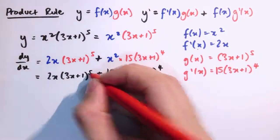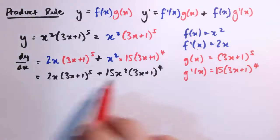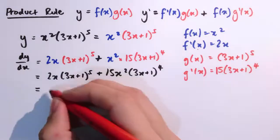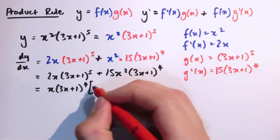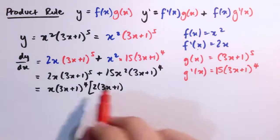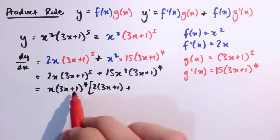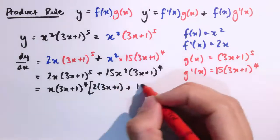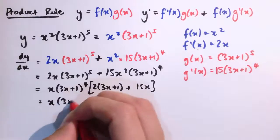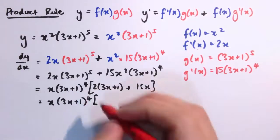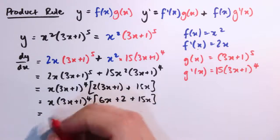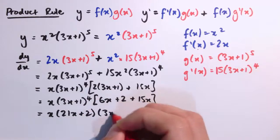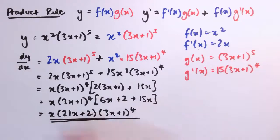To tighten this up, we notice there are common factors in these terms. Both have a common factor of x and a common factor of (3x plus 1) to the 4. So we can write this as x times (3x plus 1) to the 4. In the first term there's an extra factor of 2 and an extra factor of (3x plus 1), giving 2 times (3x plus 1), and in the second term there's a factor of 15x. Multiplying out gives 6x plus 2 plus 15x, which is 21x plus 2. So the result is x times (21x plus 2) times (3x plus 1) to the 4.